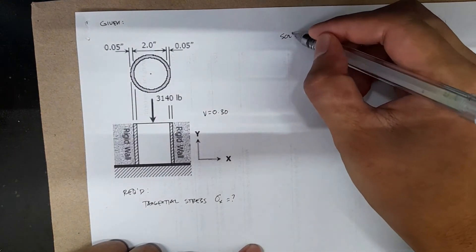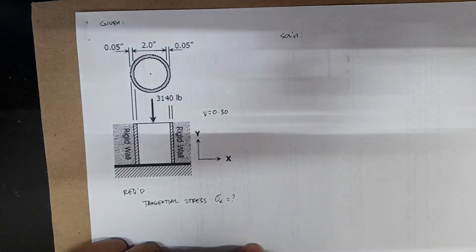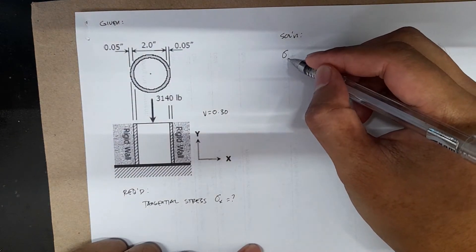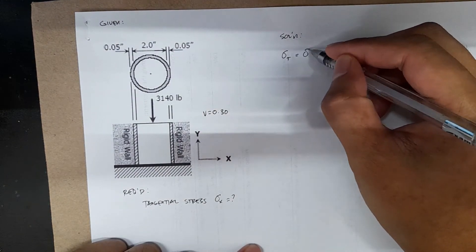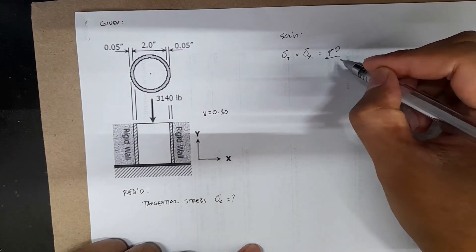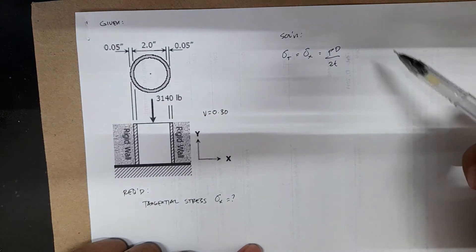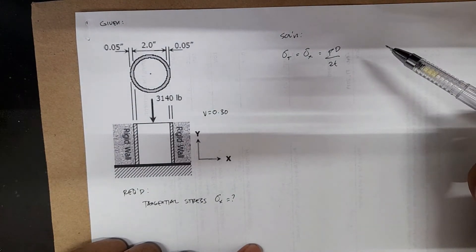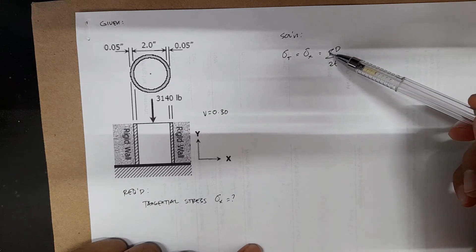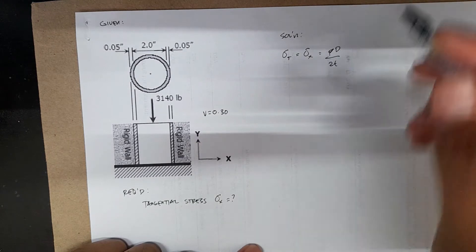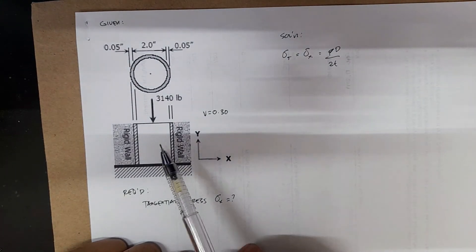For the solution, if you recall thin-walled pressure vessels, the equation for tangential stress is stress x equals PD over 2t, where P is internal pressure, D is diameter, and t is thickness. But since we don't have data on the internal pressure, we cannot use this equation for this problem.